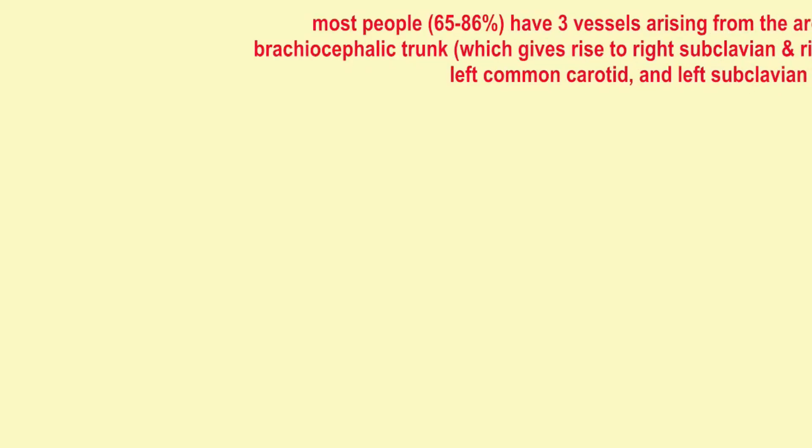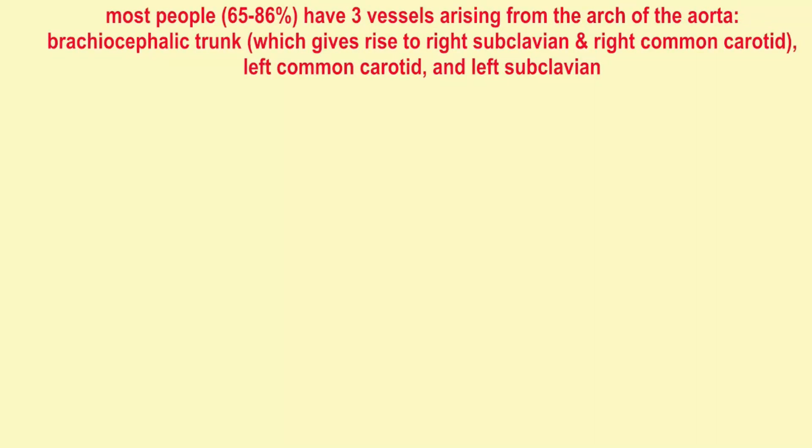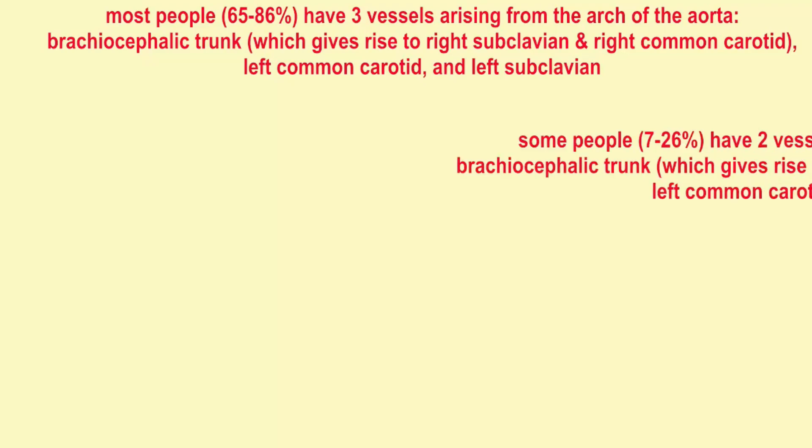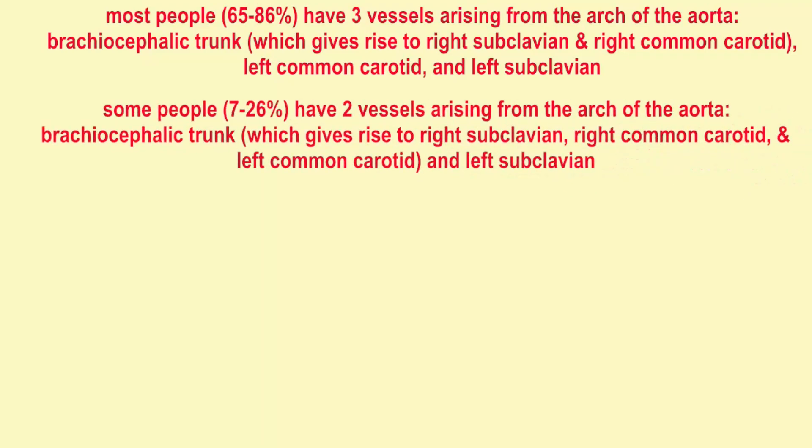Humans also vary in their blood vessels. While most people have the three vessels arising from the arch of the aorta described earlier, some people have only two vessels arising from the arch of the aorta because the left common carotid comes from the brachiocephalic trunk rather than having an independent origin. This variant is most common in Africa and South America.